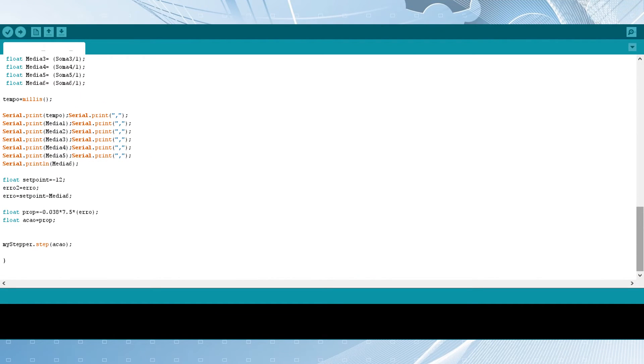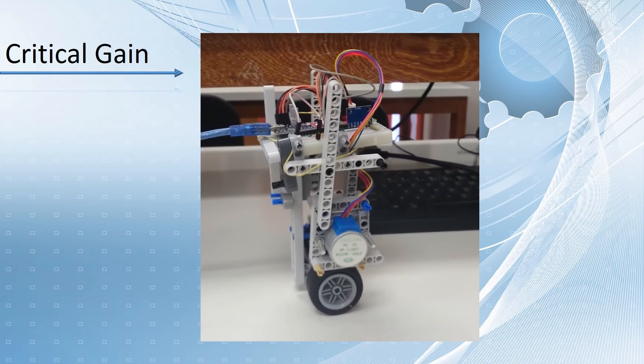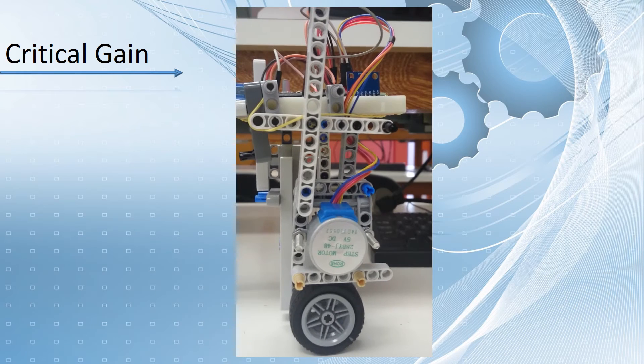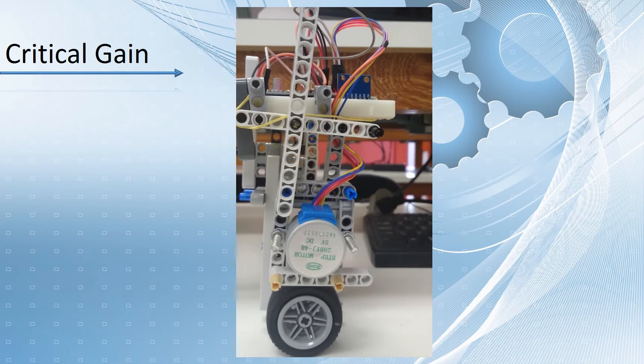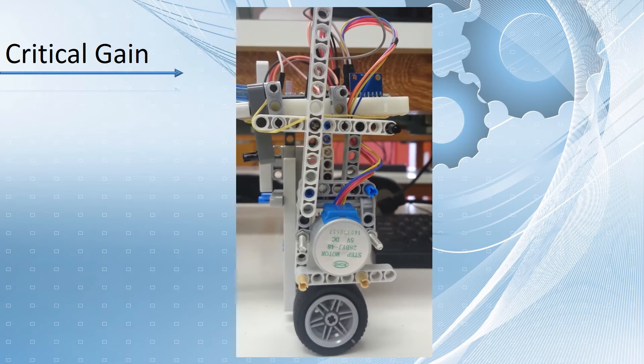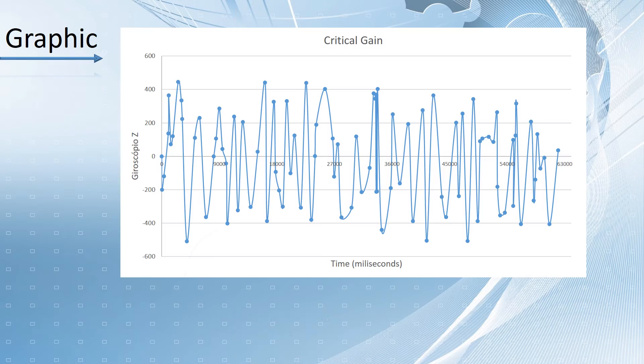This is the critical value and this is the robot response. The graphic corresponds to the sustained oscillation given by a critical value of minus 0.035, and also the critical period is 2545 milliseconds.